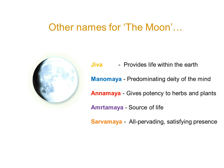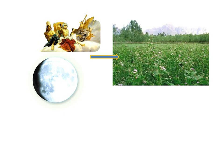Other names for the moon: Jiva, Manumaya, Anumaya, Amitamaya, Saramaya. Referring to the all-pervading, satisfying presence of the moon, giving potency to herbs and plants and the deity of the mind, and a source of life. This is describing the celestial, the high-dimensional version of the moon, where the demigods would see that the moon is full of life and Kushidrass and mountains and trees and people.